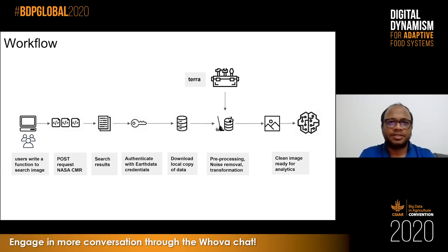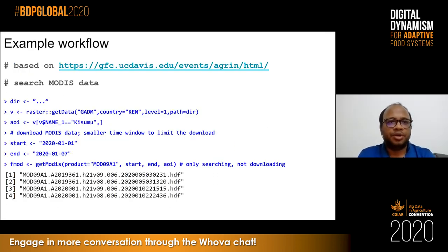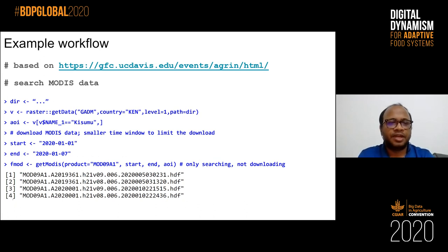Now let's see an example. Basically, how do you start? You just say library(luna), library(terra), and the function hit_products will give you all the different products that can be downloaded or searched through the interface. Because it queries through the CMR record, theoretically any dataset in the NASA DAAC system can be accessed through this. To search for data, you first define a study area. Let's say we are looking for a dataset for Kenya, for sometime in the first week of 2020.